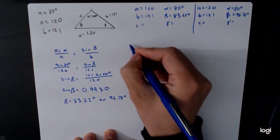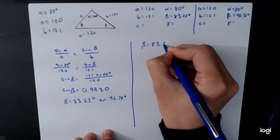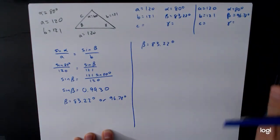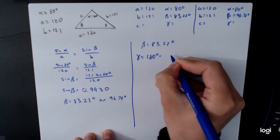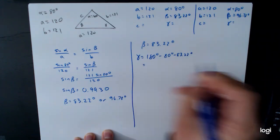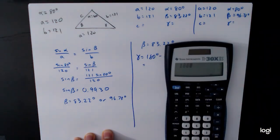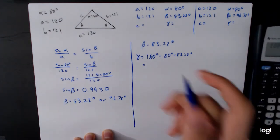And so from here, once again, we have our two different cases, beta is 83.22 degrees. And so if that's the case, then gamma is 180 minus 80 minus 83.22. So 180 minus 80 minus 83.22, 16.78 degrees.